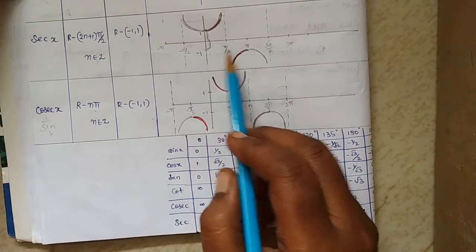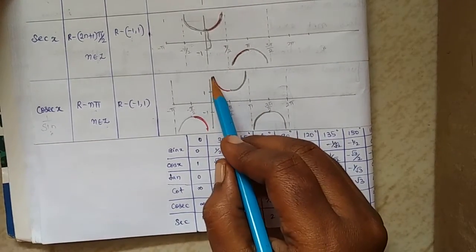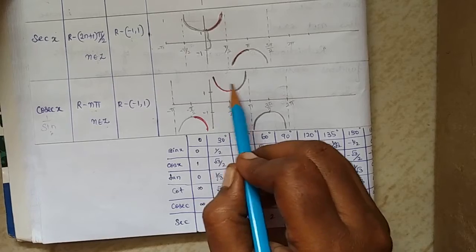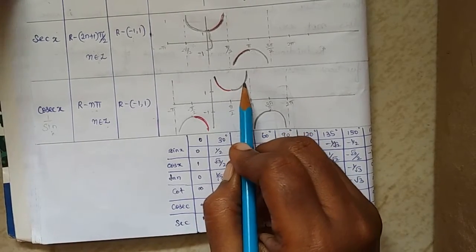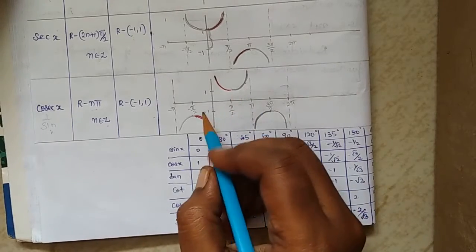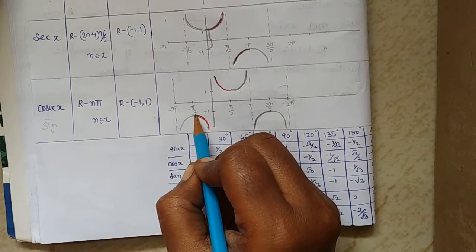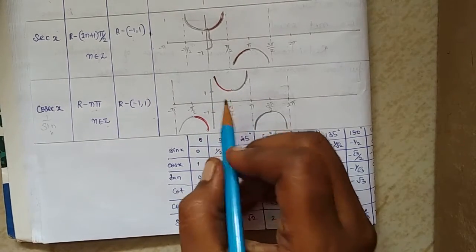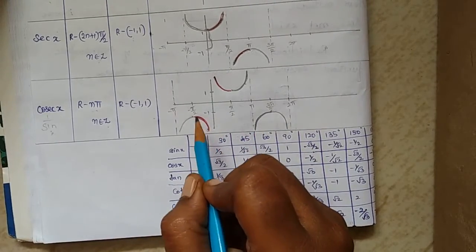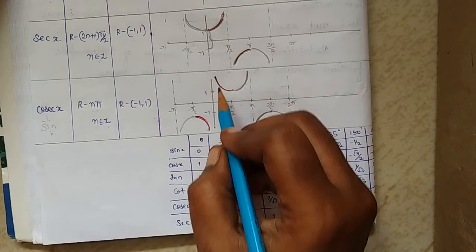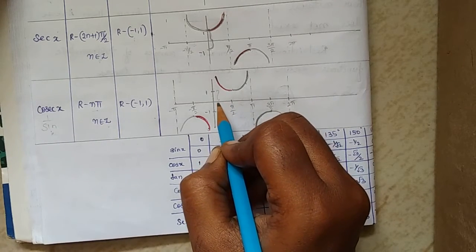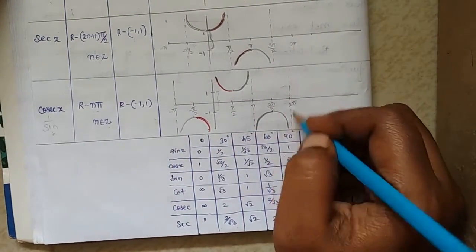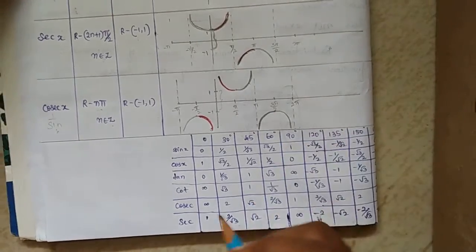Looking at the cosecant function graph, similar to how we selected the interval for secant, we need to select here too. We cannot select a single curve as such because for two values of x we get a single value. So we select half a curve from the downward direction and half curve from the upward direction, removing the points nπ, and noting there are no values between -1 and 1.